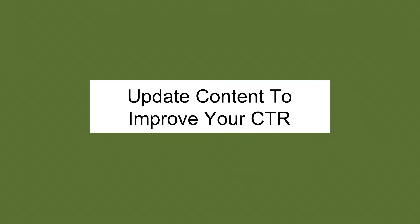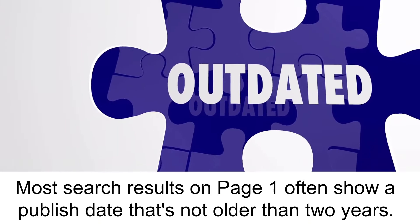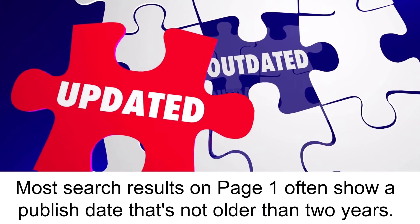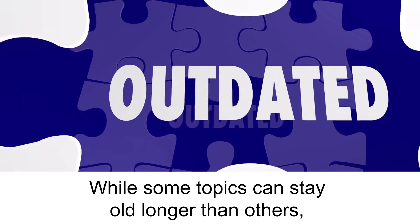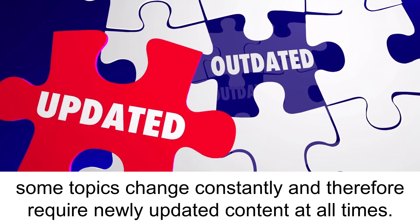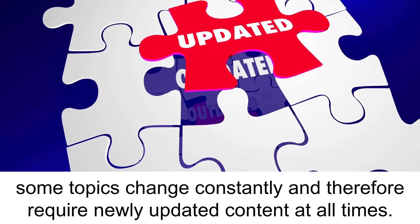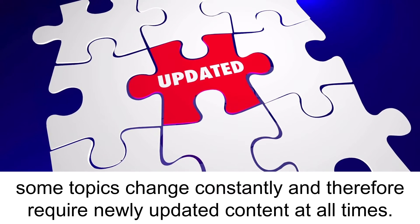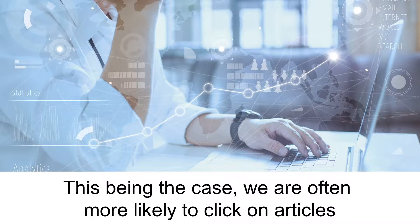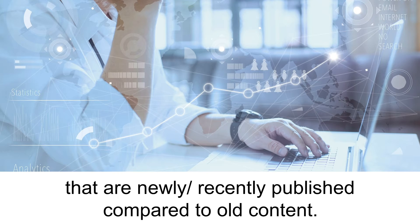Update content to improve your CTR. Most search results on page 1 often show a publish date that's not older than 2 years. While some topics can stay old longer than others, some topics change constantly and therefore require new updated content at all times. Information that was accurate a few months back can be different after some time. This being the case, we are often more likely to click on articles that are newly or recently published compared to old content.